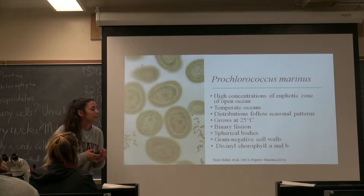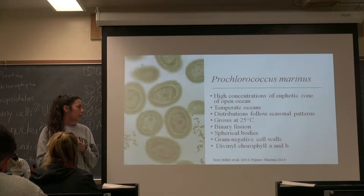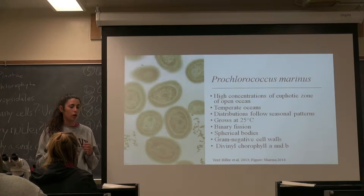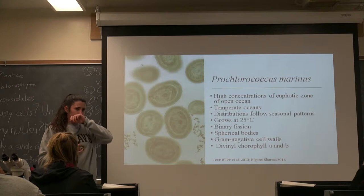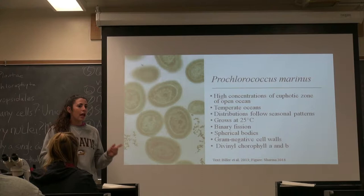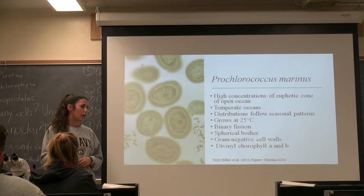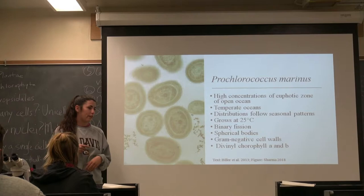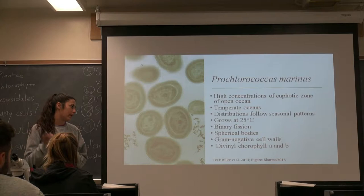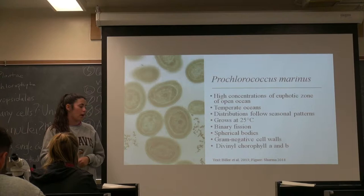So the species is Prochlorococcus marinus. It can sustain high concentrations in the euphotic zone of the open ocean. It's in temperate areas, so tropical, and sometimes the distribution of it is through seasonal patterns. According to one of the studies that I read about, it can grow at 25 degrees Celsius but can't grow at 29 degrees Celsius. The way that it reproduces is through binary fission, and they have cylindrical bodies, gram-negative cell walls, as well as chlorophyll A and B.